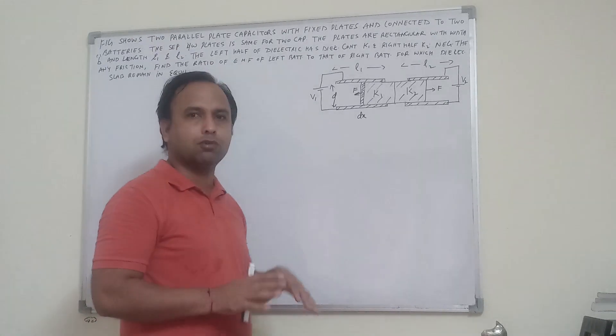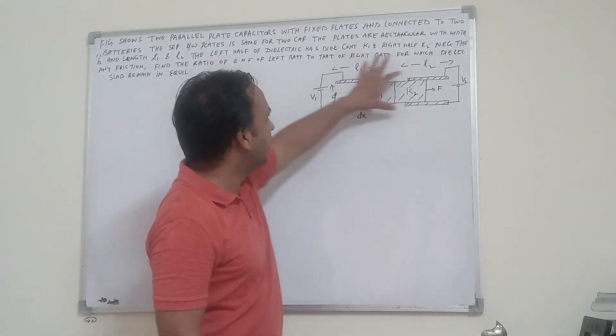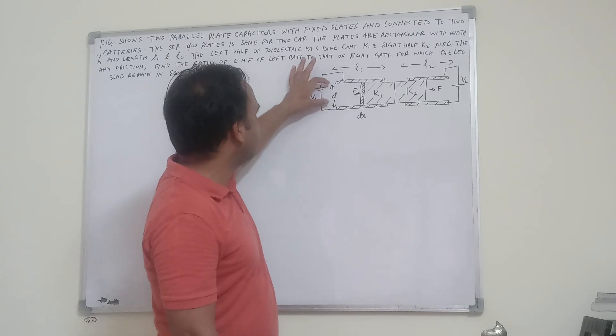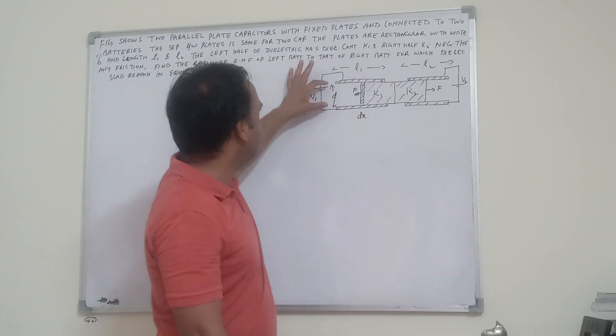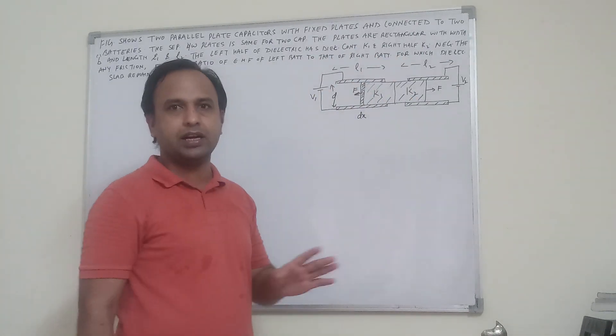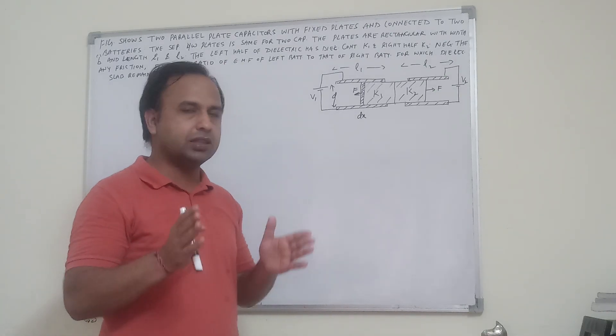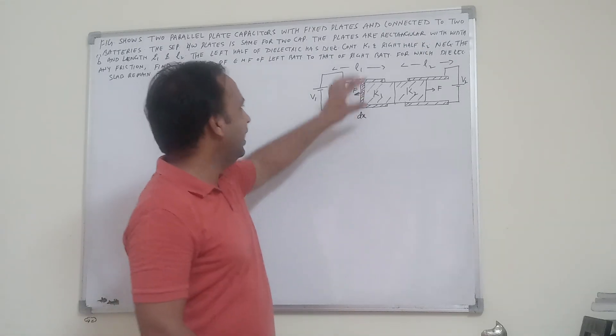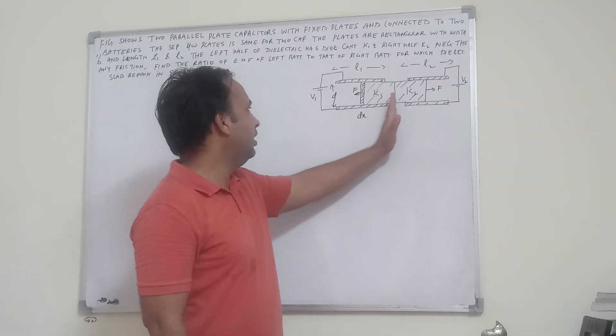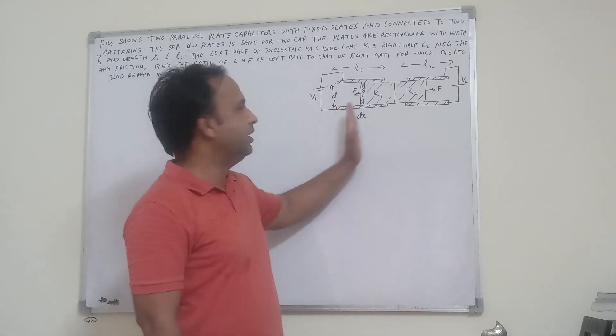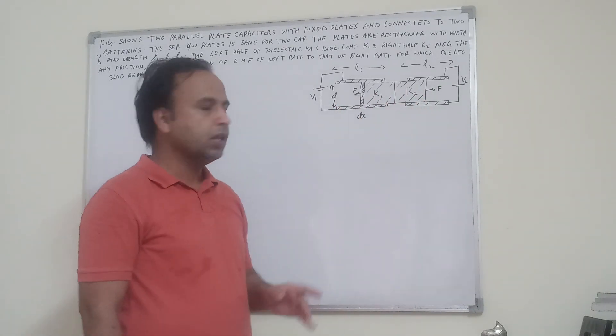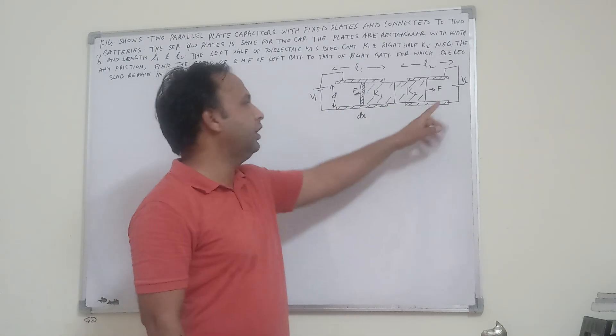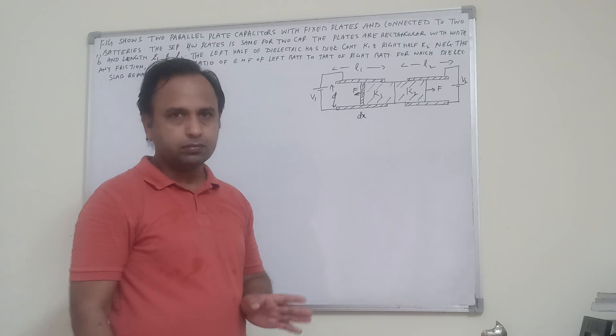I have two parallel plate capacitors. The two parallel plates have same separation between the plates. The same is D and they are rectangular plates. The width is B and length L1 and L2. The left half has dielectric constant K1 and right half has dielectric constant K2. The system is in equilibrium, so V1 and V2 ratio is in equilibrium.